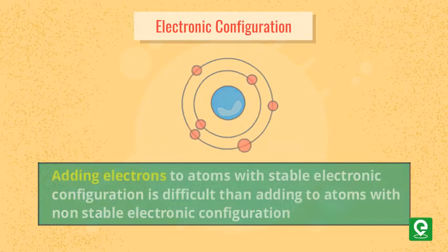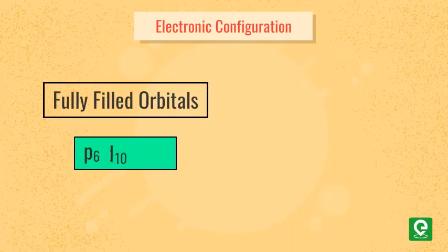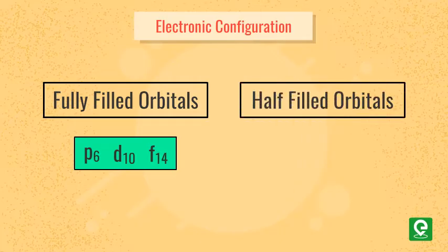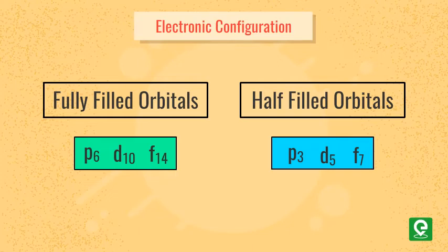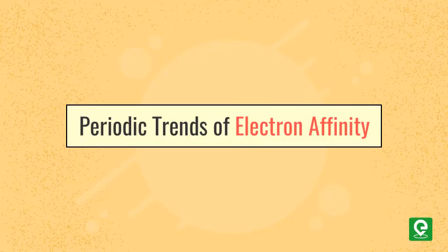The stability of the configuration having fully filled orbitals (p6, d10, f14) and half filled orbitals (p3, d5, f7) is relatively higher than that of other configurations. Let's look at the periodic trend of electron affinity to clearly understand the effects of these factors.